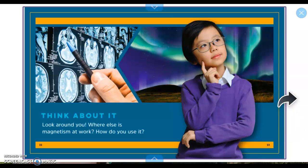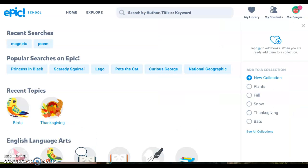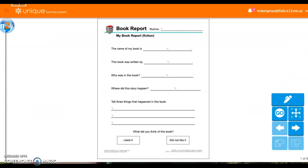Think about it. Look around. Where else is magnetism at work? And how do you use it? Okay, so I'm going to stop this, and we're going to go back to our book report. Okay, the first part of our book report is to decide what kind of book it was. Remember, we are deciding between fiction or nonfiction. Fiction is a pretend story or made up, and nonfiction is a real story. So if we're talking about magnets, which one do you think it is?